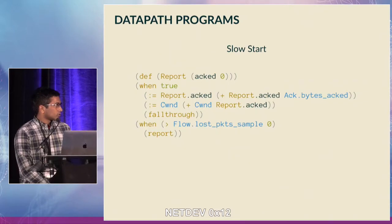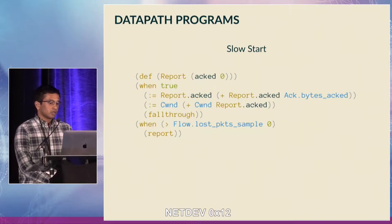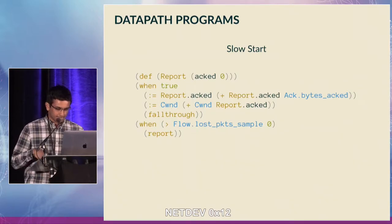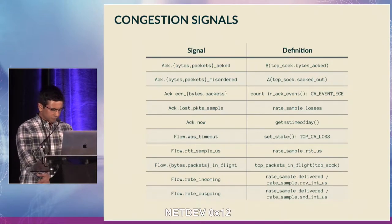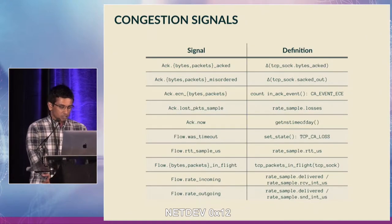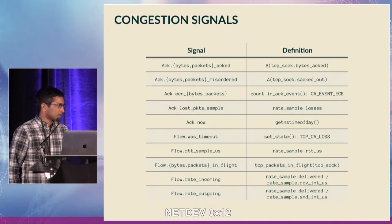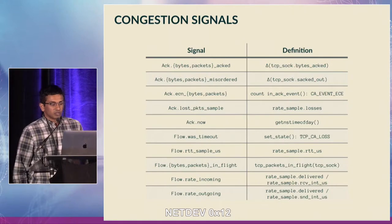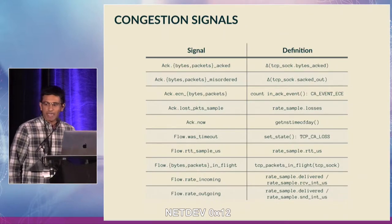This is the full list of congestion control signals we support for use in datapath programs, with definitions in terms of the Linux TCP datapath. We view this list as an evolving standard, but new congestion control signals don't come along that often. All of these except the last two were in Linux for a very long time, and the last two are now in net-next as of two days ago.